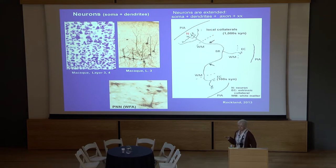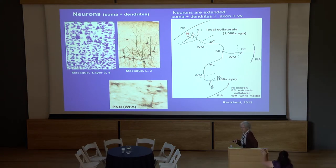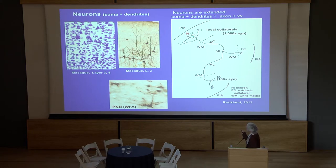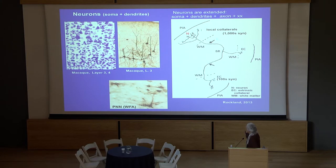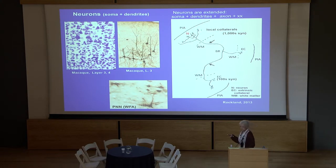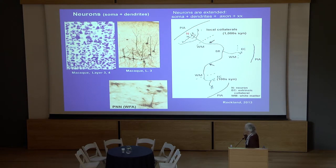The neuron has extension. There are local collaterals and extrinsic targets, often more than one. We can start thinking about what happens at branch points — is there a failure of transmission, or selective transmission? Looking at the numbers — simply counting synapses — local collaterals will typically have upwards of thousands of synapses, synapsing on thousands of postsynaptic neurons, whereas extrinsic collaterals, at least for cortical neurons in the monkey, tend to be more in the hundreds. That's only a rule of thumb and oversimplified to some extent.